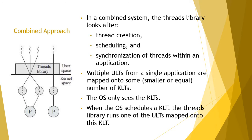In the figure shown here, three ULTs are mapped to two KLTs. If any one of the two KLTs on the left is run by the OS, any of the three ULTs on the left can dynamically map to it and execute. However, the ULT on the right is hard-bound to the KLT on the right — if that KLT runs, only its mapped ULT will execute.